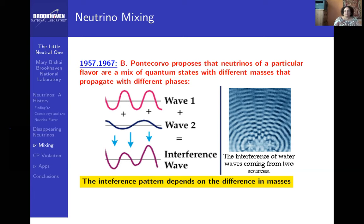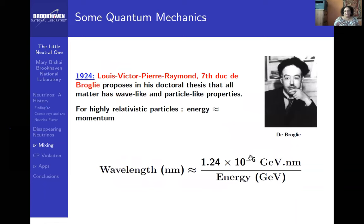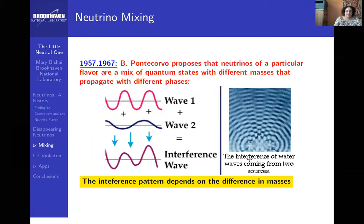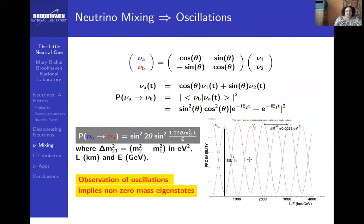The key thing about neutrinos is their masses are very small, which means their wavelengths are much bigger. A proton has a wavelength of about 1.24 × 10^-15 meters, while a neutrino's wavelength is a billion times larger, because its mass is less than one electron volt. So you can write down the mixing between different generations, and you can work out the quantum mechanics of oscillations.